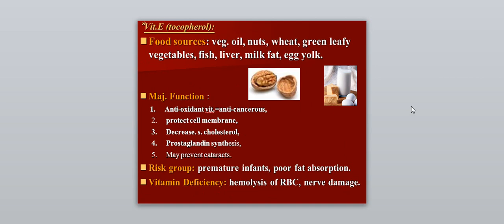Vitamin E, also called tocopherol. Food sources include vegetable oils, nuts, wheat, green leafy vegetables, fish liver, milk fat, and egg yolk. The major function is acting as an antioxidant and anti-carcinogenic, protecting cell membranes, decreasing serum cholesterol especially in those with hypertension or hypercholesterolemia, playing a role in prostaglandin synthesis, and possibly preventing cataracts. The risk group is mainly premature infants and those with poor fat absorption. Vitamin E deficiency causes hemolysis of red blood cells and nerve damage.